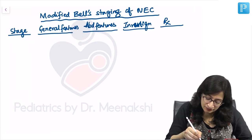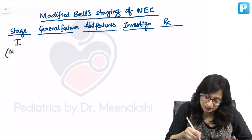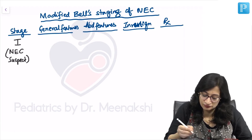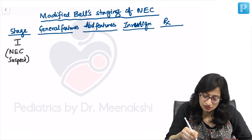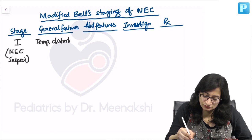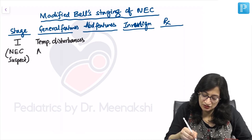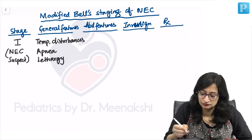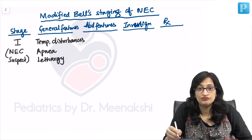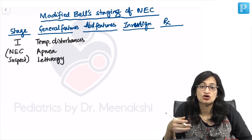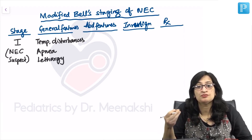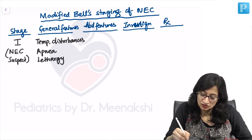Stage 1 is also called NEC suspect. General features here include temperature disturbances, apnea, and lethargy. Abdominal or GI features include feed intolerance — the baby may not tolerate feed, so abdominal distension may be seen or elevated pre-feed residues can be seen.